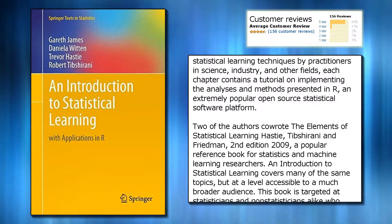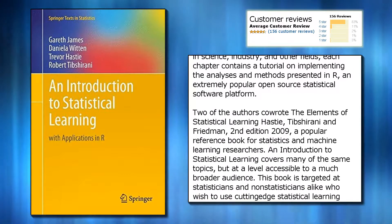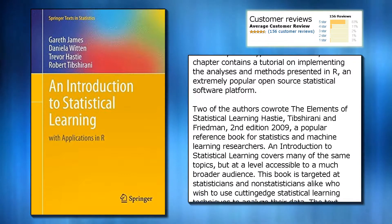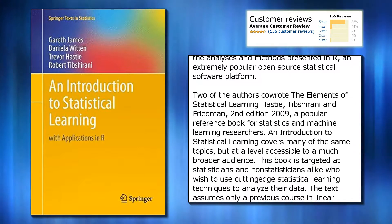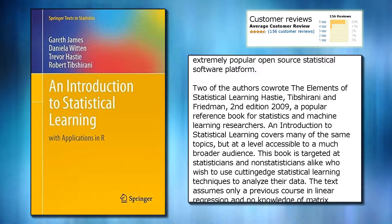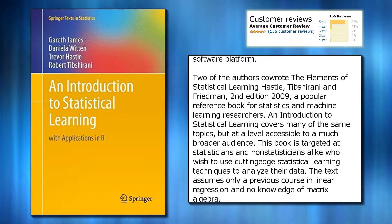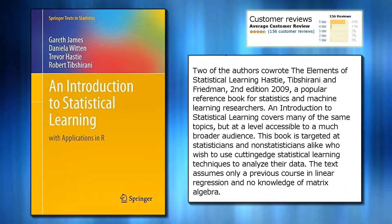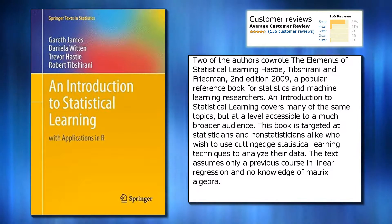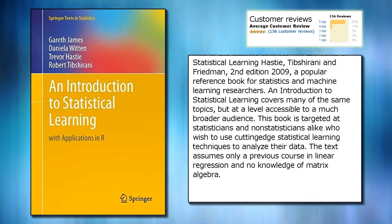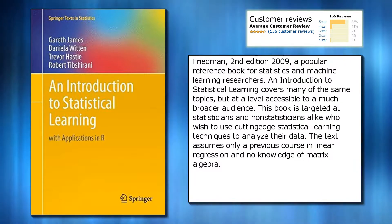R is an extremely popular open-source statistical software platform. Two of the authors co-wrote The Elements of Statistical Learning — Hastie, Tibshirani, and Friedman, 2nd edition 2009 — a popular reference book for statistics and machine learning researchers. An Introduction to Statistical Learning covers many of the same topics, but at a level accessible to a much broader audience.